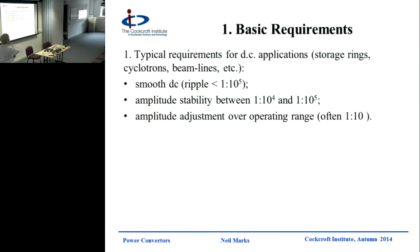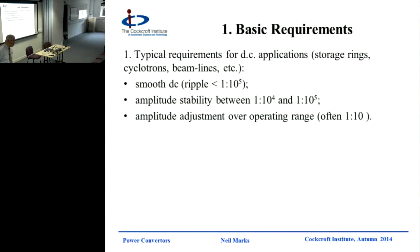So what do we basically need for the DC application? This would be storage rings, cyclotrons, synchrotrons, the whole lot. We need smooth DC - ripple variations better than one part in 10 to the 5. Amplitude stability: you don't want the things bouncing up and down all the time, between one part in 10 to the 4 and one part in 10 to the 5. And then we need to be able to adjust the amplitude - from the controller with a knob, or more likely with the computer these days - with a resolution of the order of one part in 10 to the 5, over a range of at least one in 10, if not more.